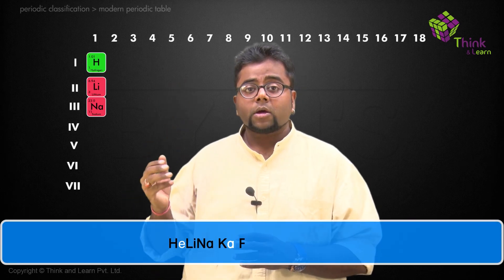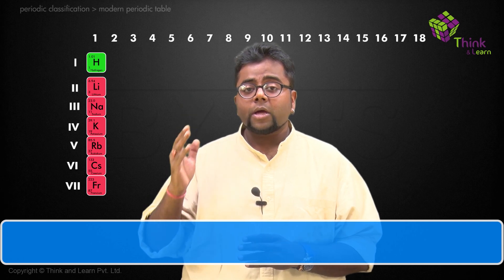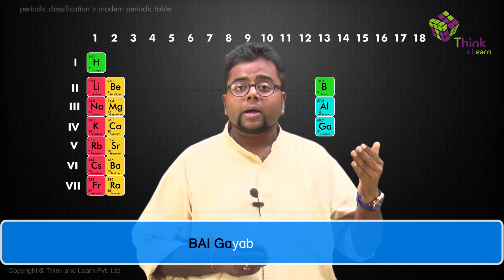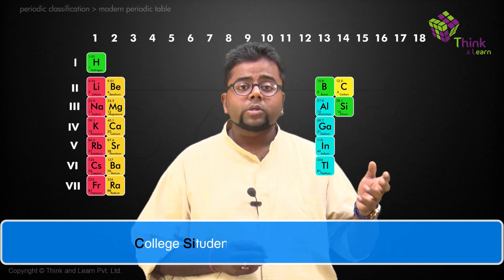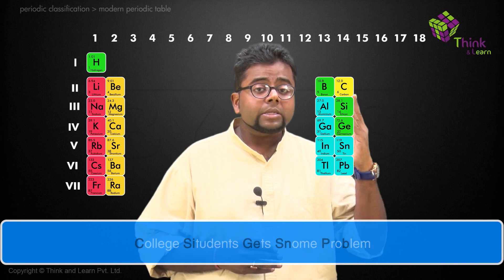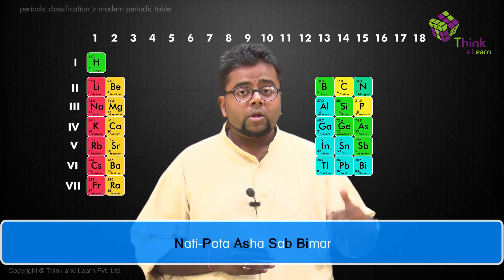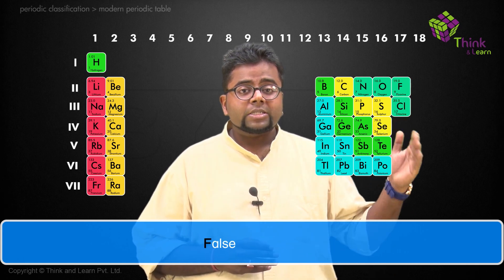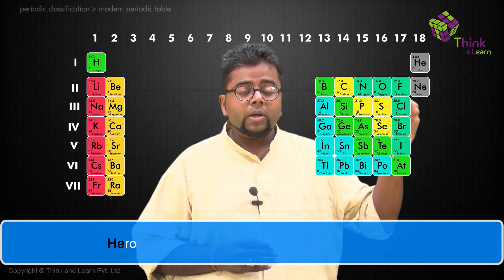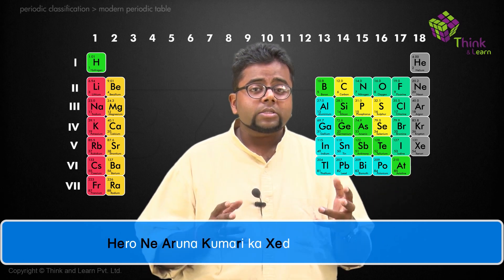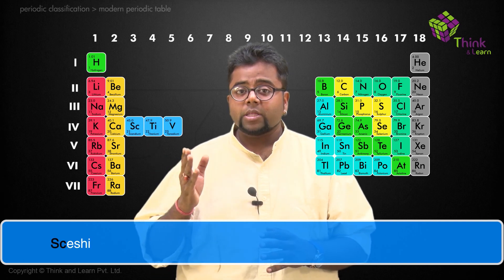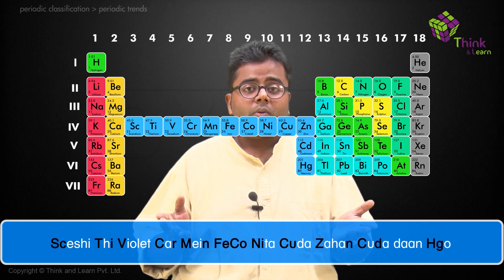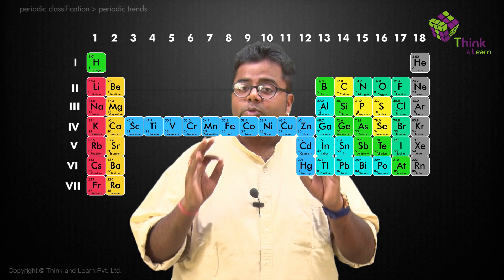The first mnemonic is: 'Helena ka rubi se fraud.' The second one is: 'Bina mango ka strawberry bana rakha.' Group 13 is: 'Baal gayab in Taliban.' Then it is: 'College students get some problem.' Then: 'Naati pota asha sab bimaar.' Then: 'Os se teri puja.' Then: 'False CBI act.' Then: 'Hero ne Arunakumari ka zedon redon kar diya.' Then: 'Shishi thi violet car mein feko nita koora jahan koora daan ho.' These are the elements that you should know.